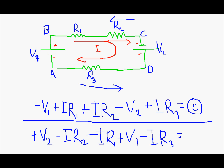And this is our equation. Now both these equations are the same. If you multiply minus one on both sides of the above equation, you will get the lower equation. So both equations are the same — you can travel whichever way you want, just apply the law correctly.